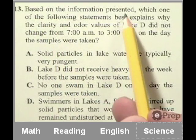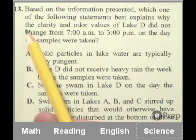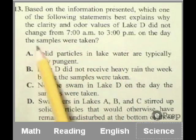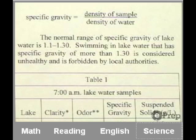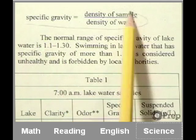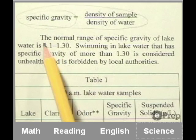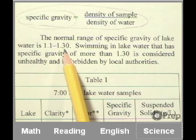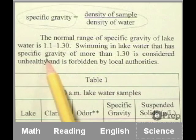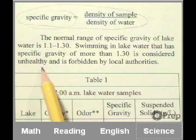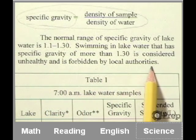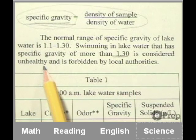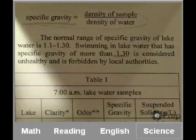Based on the information presented, which one of the following statements best explains why the clarity and odor values of Lake D did not change from 7am to 3pm on the day the samples were taken. So let's quickly take a look right here. And here's the formula for specific gravity. And right underneath it it says, the normal range of specific gravity of lake water is 1.1 through 1.3. Swimming in lake water that has specific gravity of more than 1.3 is considered unhealthy and is forbidden by local authorities.